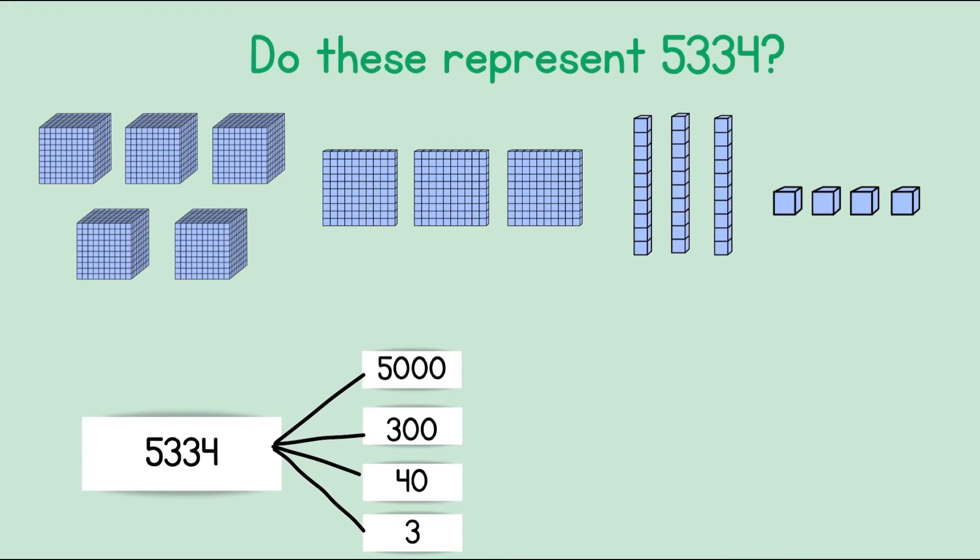Let's count these and check what number it is. 1,000, 2,000, 3,000, 4,000, 5,000. 100, 200, 300.